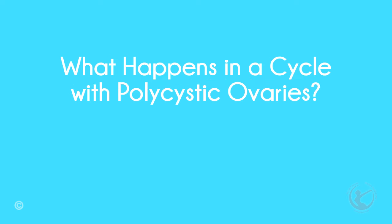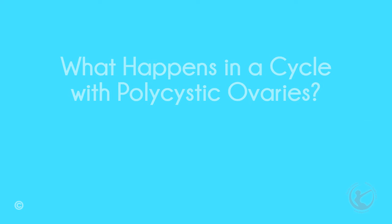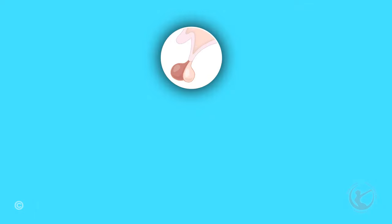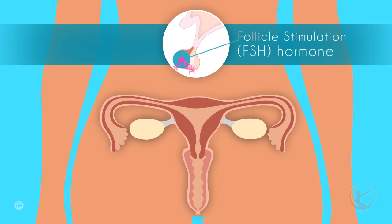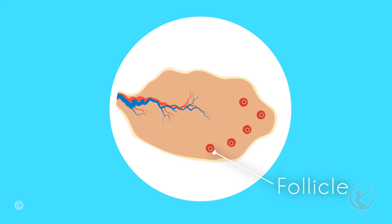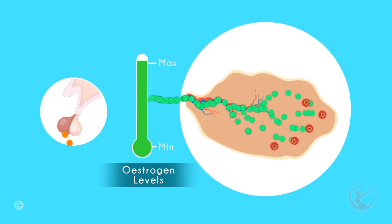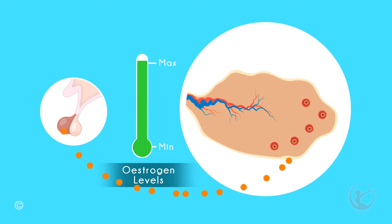What happens in a cycle with PCOS? Before watching this, I would suggest you view our video on what happens in a normal menstrual cycle, which will give you a better understanding of the differences. In polycystic ovaries, FSH, or follicle-stimulating hormone, stimulates these multiple follicles. Instead of a few follicles producing estrogen, all these follicles produce estrogen. The estrogen levels therefore rise very quickly and trigger the LH luteinizing hormone release, even though none of the follicles may be ready for ovulation.